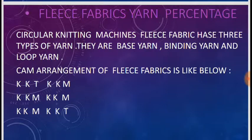Fleece fabric has three types of yarn: base yarn, binding yarn, and loop yarn. The cam arrangement of a fleece fabric is shown below — this is the normal fleece fabric cam arrangement. K is for knit cam, T is for tuck cam, and M is for miss cam. Here six boxes are drawn for normal fleece fabric.